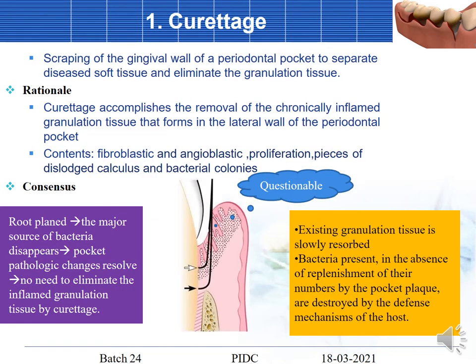The first procedure is curettage. Curettage is the scraping of the gingival wall of the periodontal pocket to separate diseased tissue and eliminate granulation tissue — essentially root planing performed on the tissue side. The rationale is that it accomplishes removal of chronic inflamed granulation tissue forming the lateral wall of the pocket, which contains fibroblastic and angioblastic proliferations, pieces of dislodged calculus, and bacterial colonies.